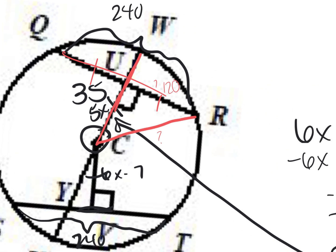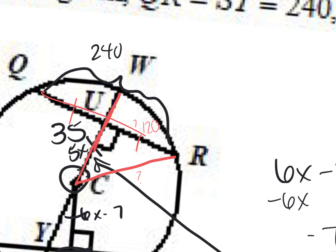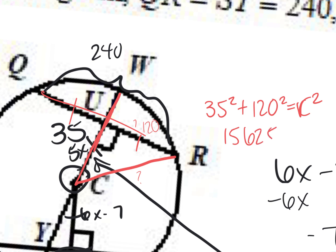How do I figure out the third side in a right triangle? The Pythagorean theorem — very good. So the setup is 35 squared plus 120 squared equals R squared, where R squared is our radius. Then you take the square root and we get 125 equals R. That is our answer.